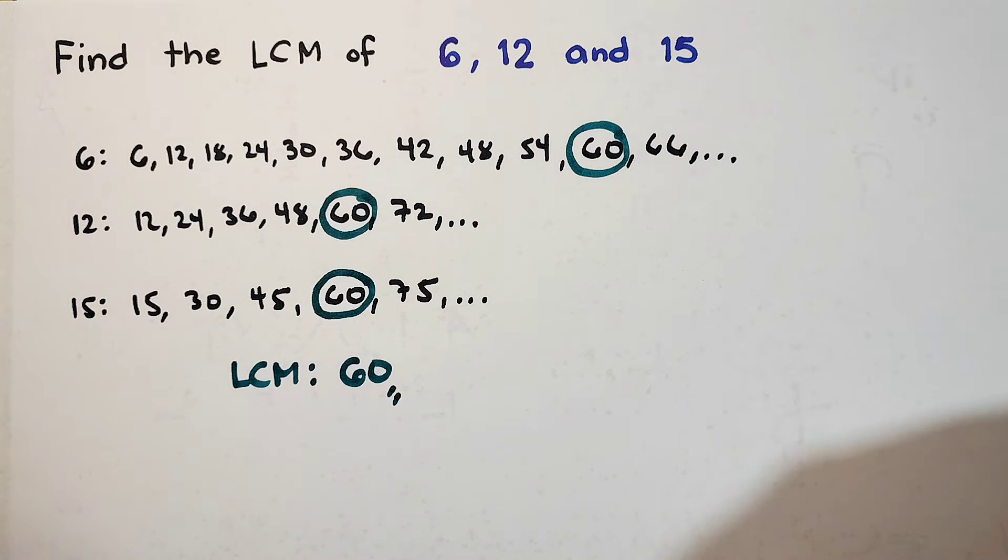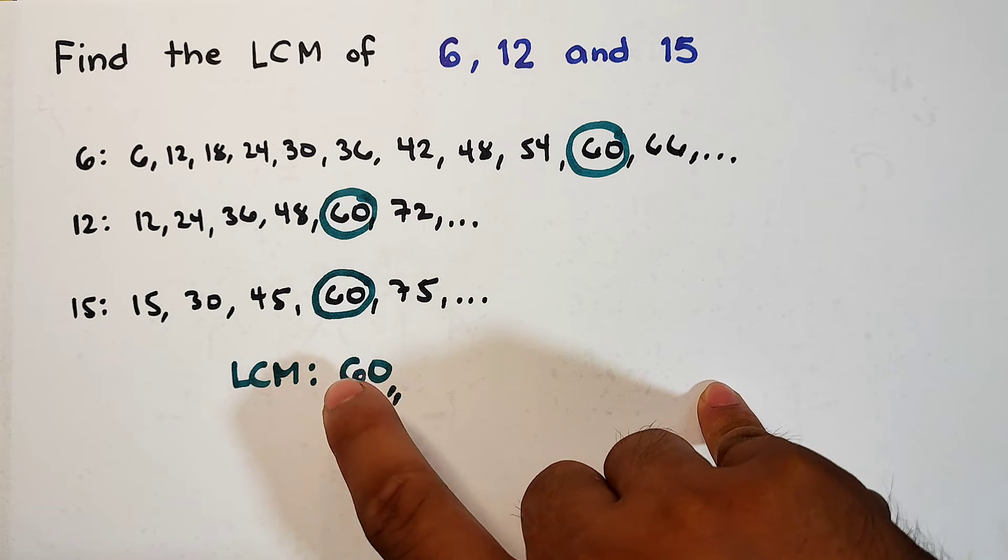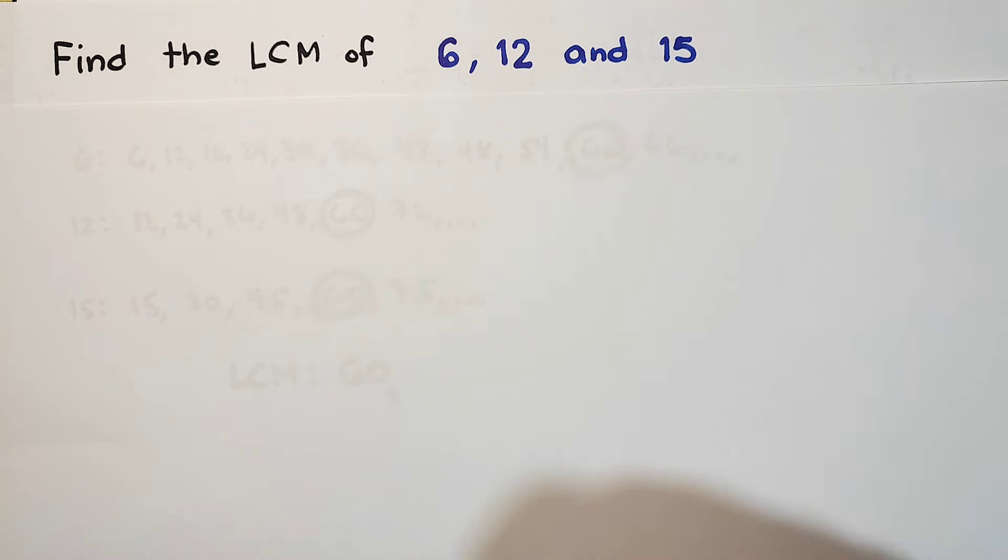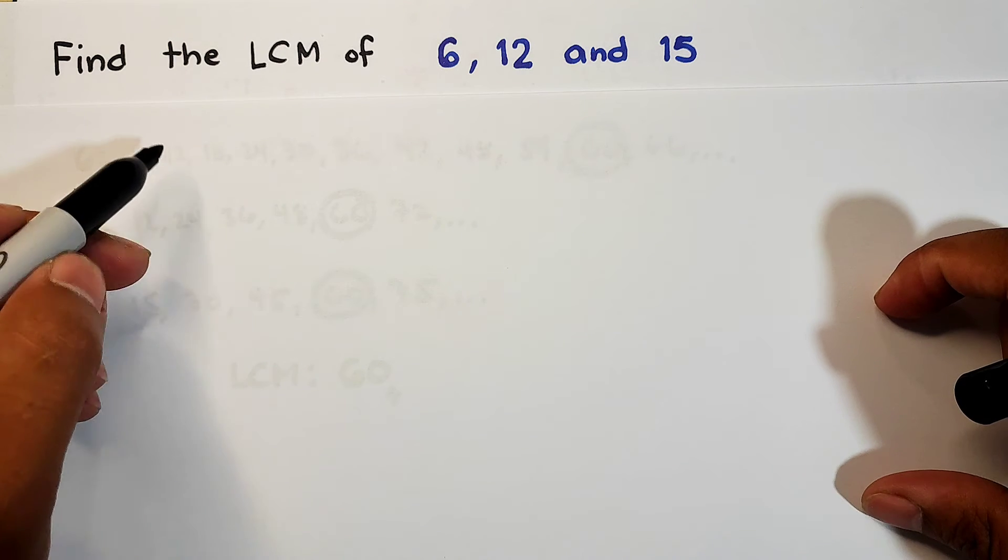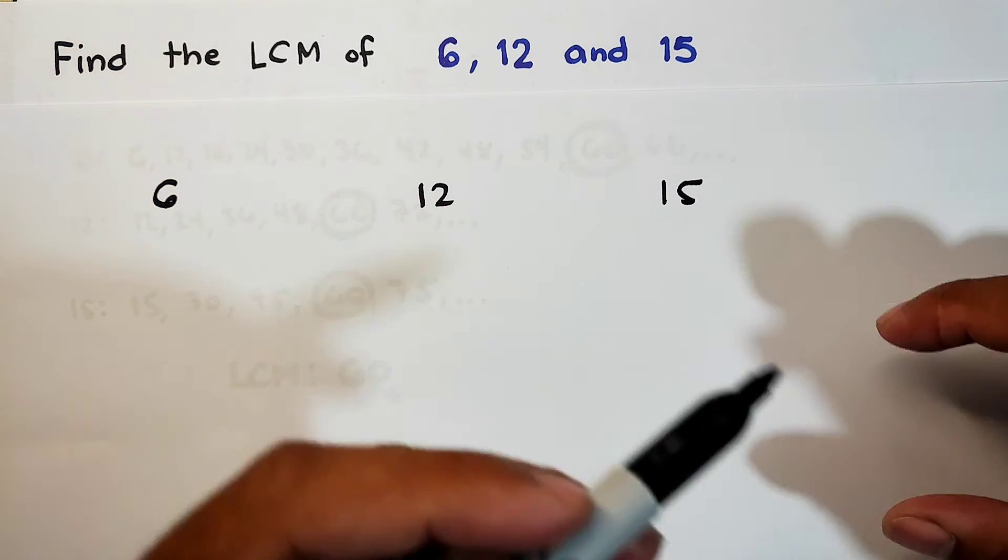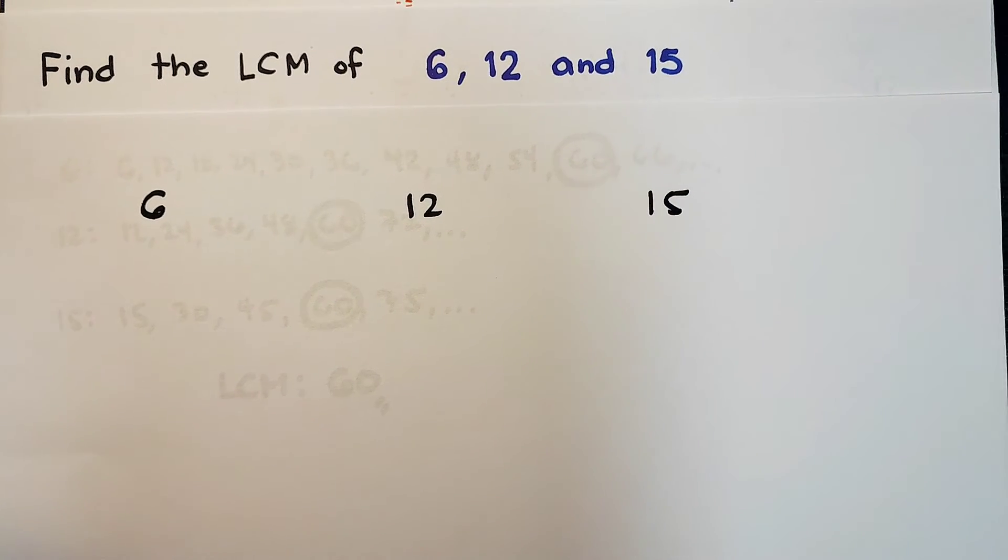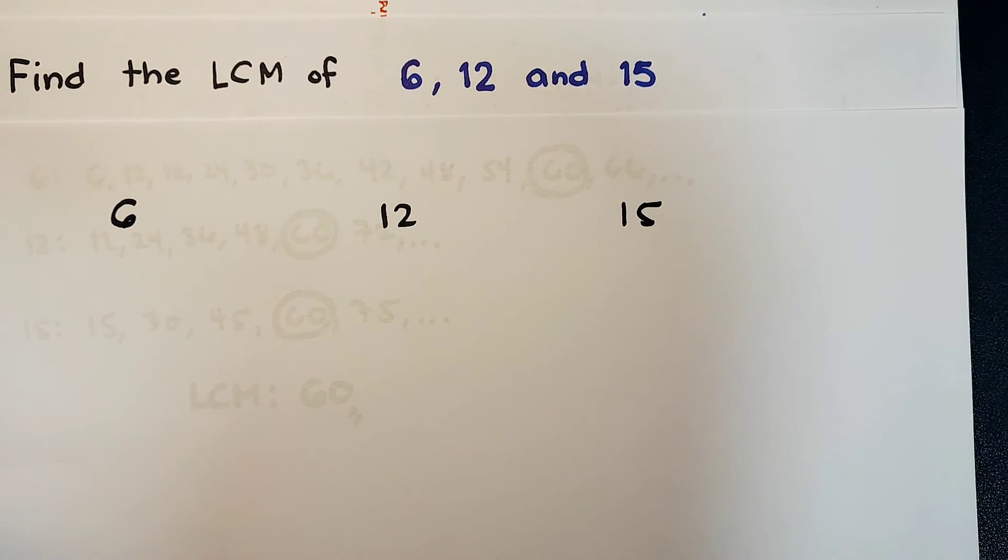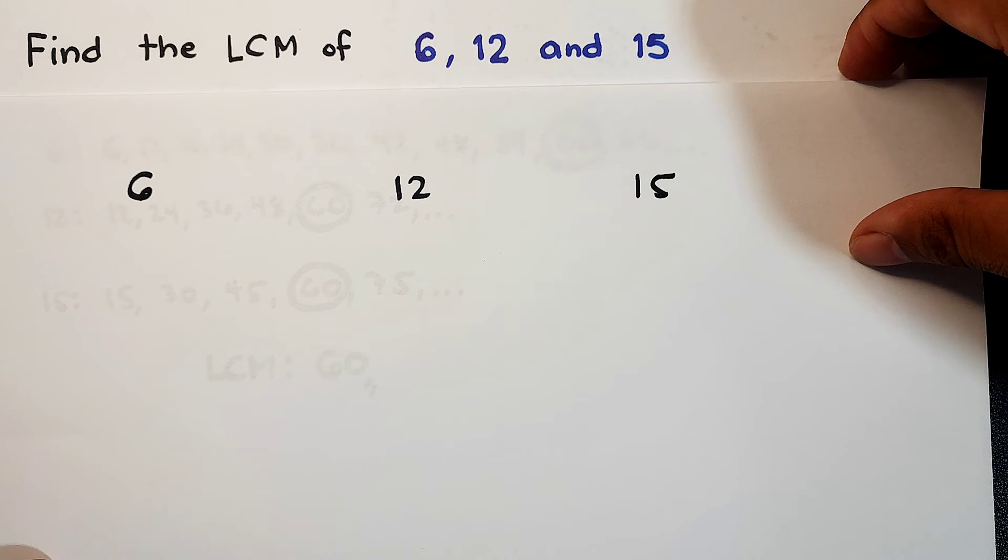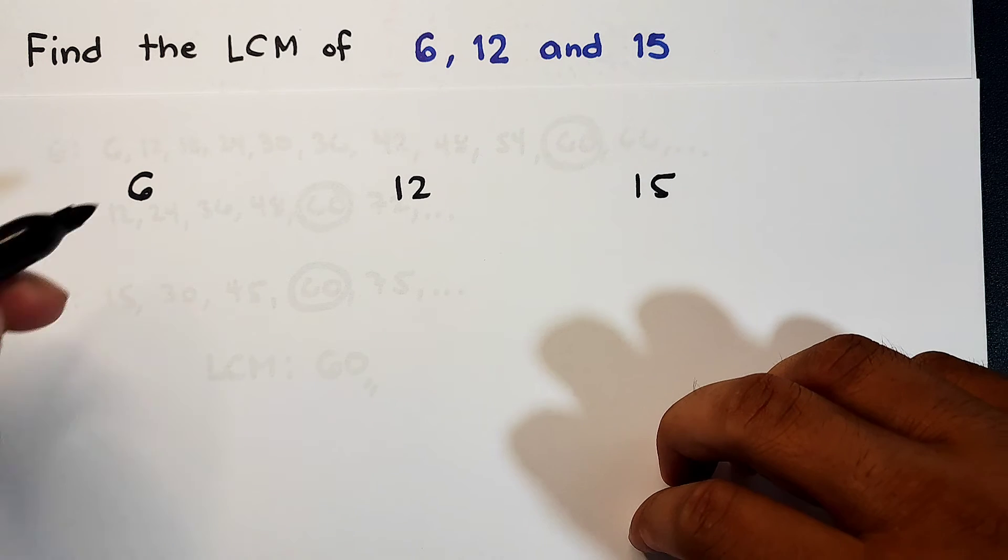So guys, in this case, as you can see, what we used here is the listing method. So I'm gonna show you how to use the prime factorization para makuha natin yung LCM, and dapat ang maging sagot natin is also 60. So let us try to calculate for the LCM of 6, 12, and 15 using factorization. Let me put these numbers: 6, 12, and 15. Guys, I'm showing you two different methods para may options kayo when your teacher gives you the assignment. At least alam nyo na, diba? So how to use the prime factorization? Factor lang natin ito.